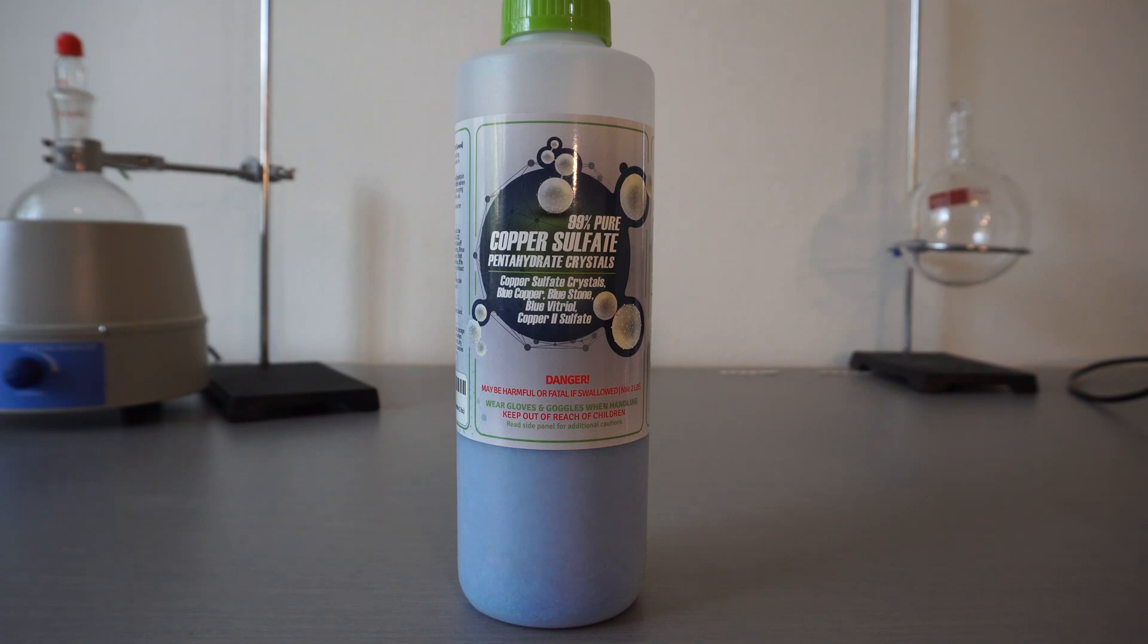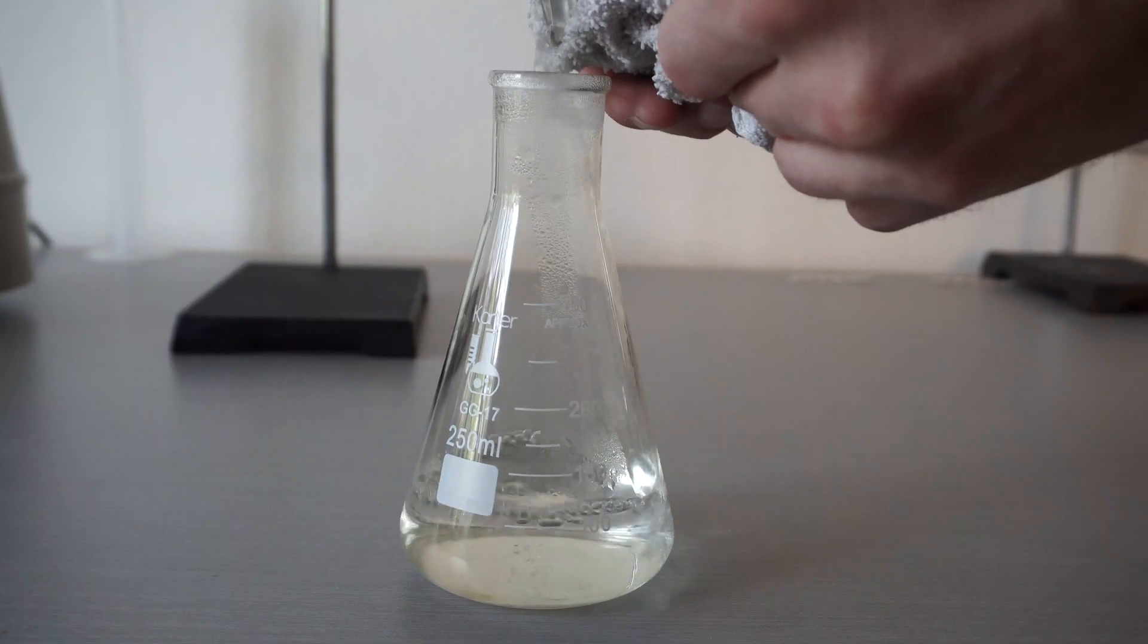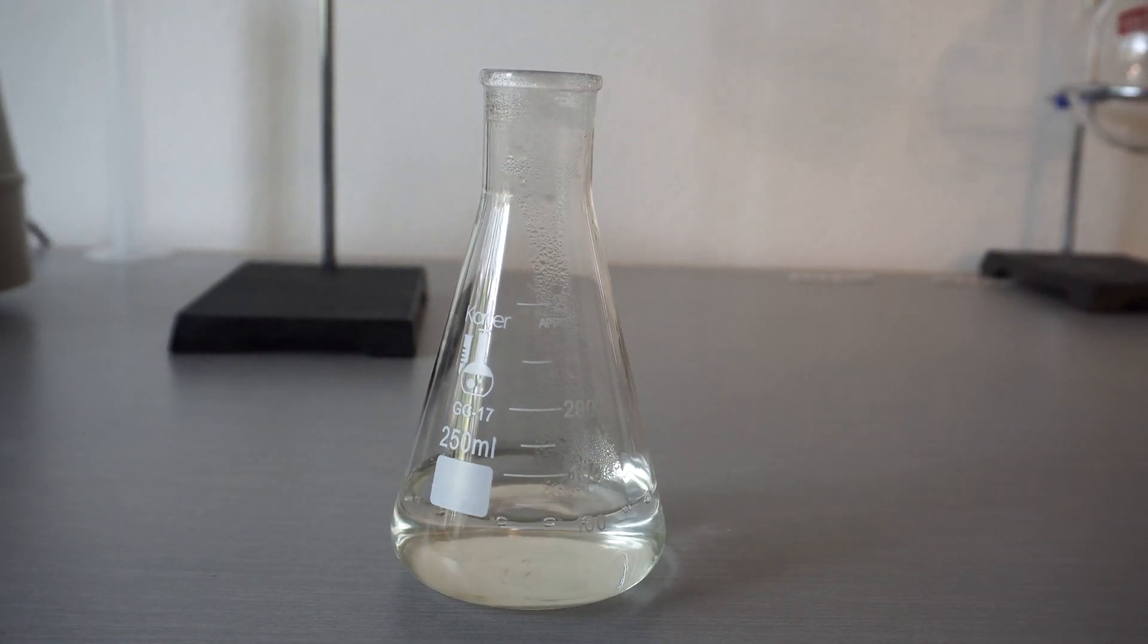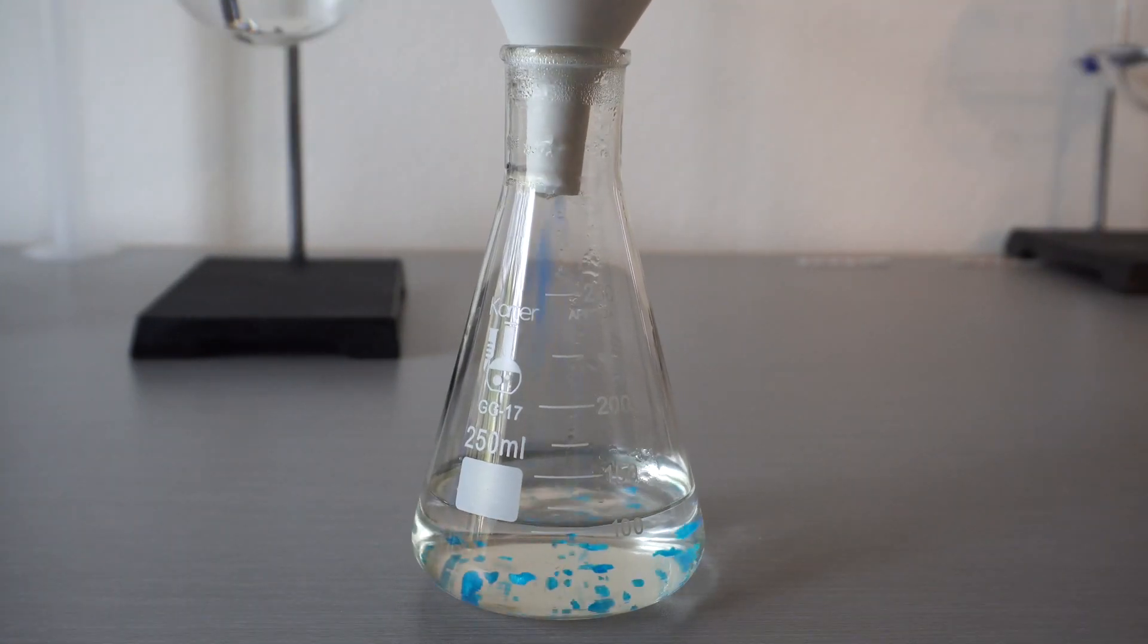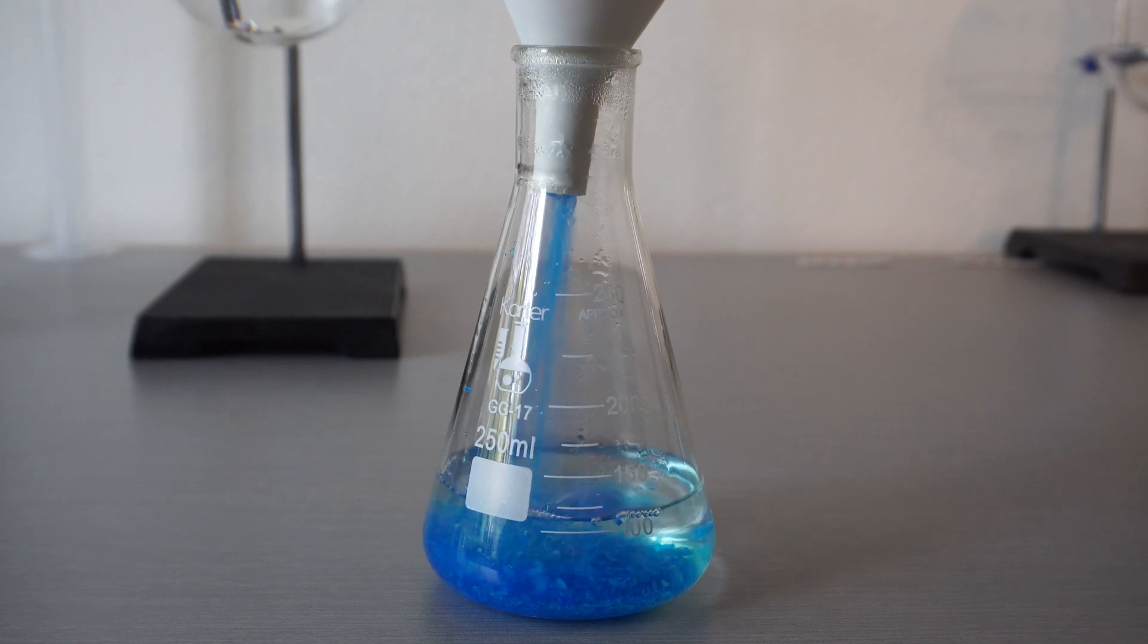All we need is copper sulfate, boiling water, sodium chloride, and aluminum foil. This reaction is slightly exothermic so it is always best that this is done in a well ventilated area or outside.